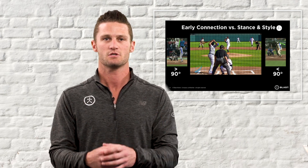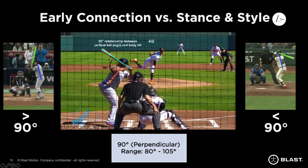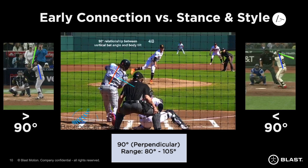As the bat begins from load into rotation, Blast measures the relationship between your body tilt and your vertical bat angle — you're looking for 90 degrees. As you begin to rotate, you want to stay connected up until impact. Connection at impact measures that same relationship at the moment of contact. If you're connected both early and at impact, you'll have a good swing plane because all you're doing is rotating the bat around your body.